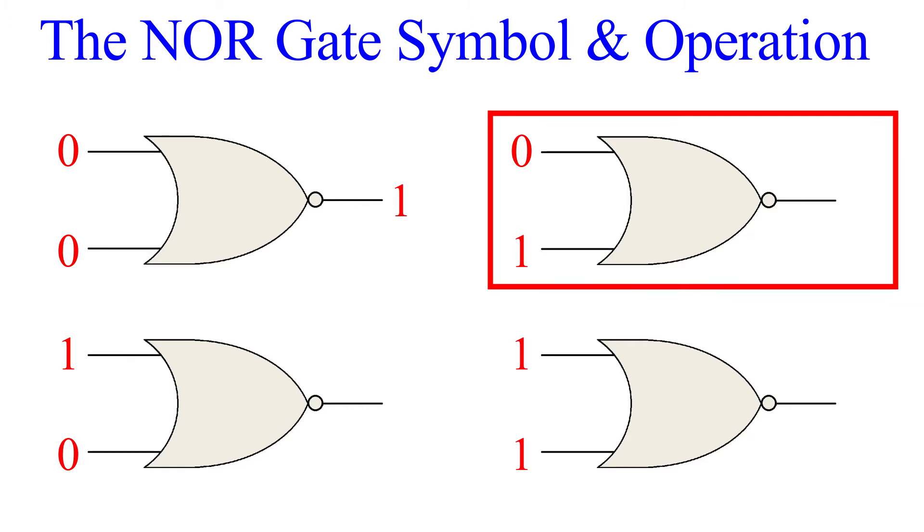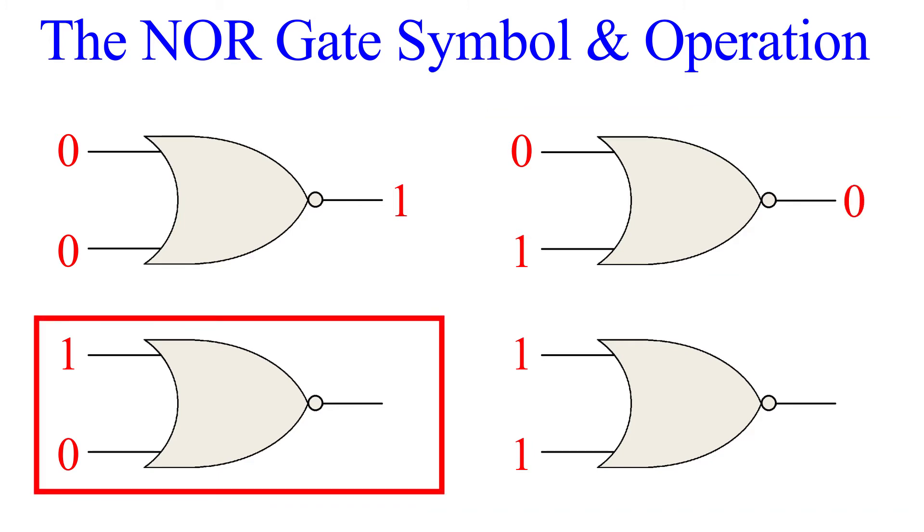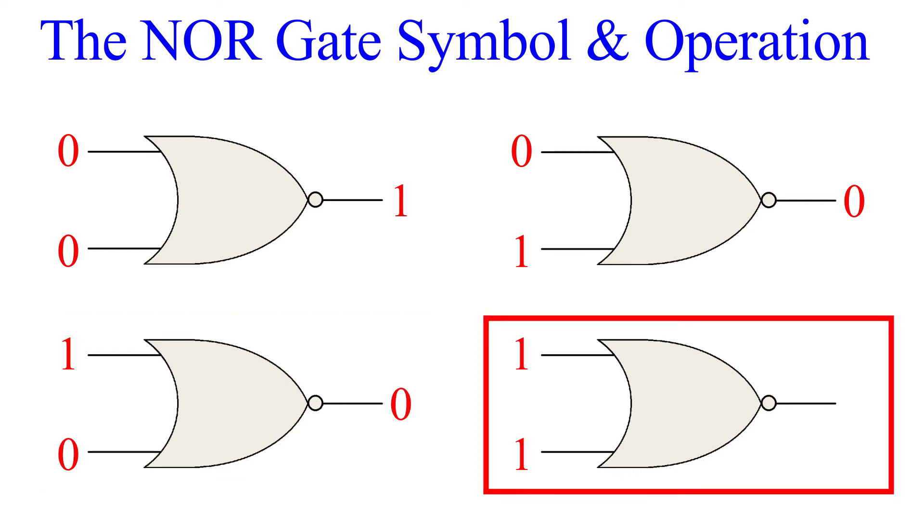The next is 0 and 1. An OR would produce a one on the output, so inverting that we get zero. Next is 1 and 0, the mirror of the previous gate. Again, this one will have an output of zero. Finally, we have 1 and 1. An OR gate would produce an output of one, so this produces the inverse: zero.